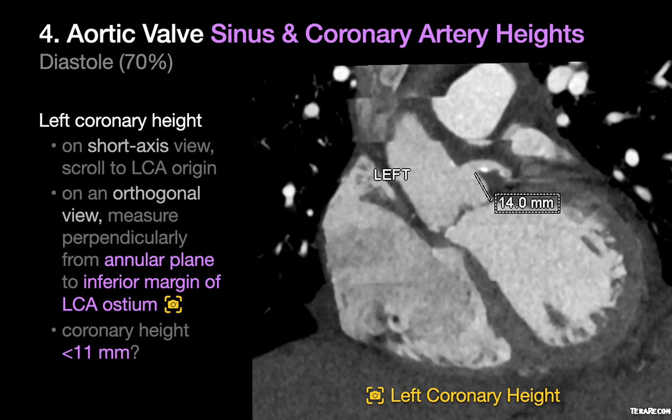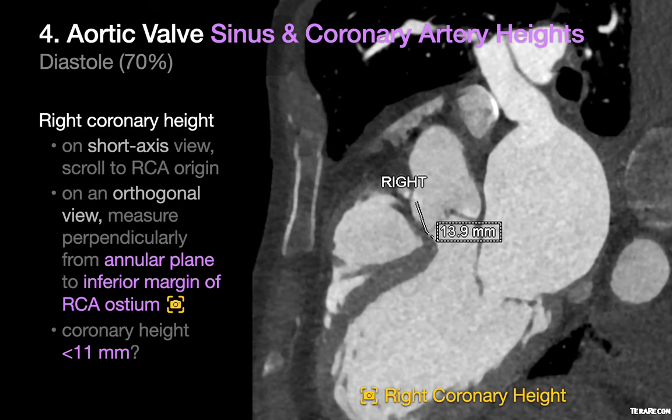Go back to your short axis view and scroll superiorly to the left main coronary artery origin. Go to a long axis view and measure the left coronary height perpendicularly from the aortic annular plane to the inferior margin of the left main coronary artery ostium. Call out coronary height measurements under 11 millimeters since the risk of coronary artery occlusion after TAVR is higher. Do an image capture. Go back to your short axis view and scroll to the right coronary artery origin, then go to a long axis view and measure the right coronary height perpendicularly from the aortic annular plane to the inferior margin of the right coronary artery ostium. Call out measurements under 11 millimeters and do an image capture.